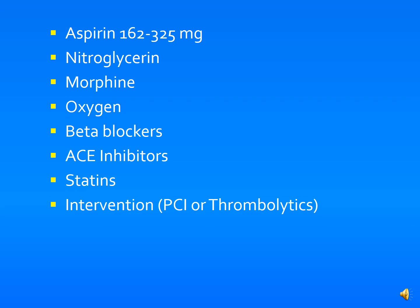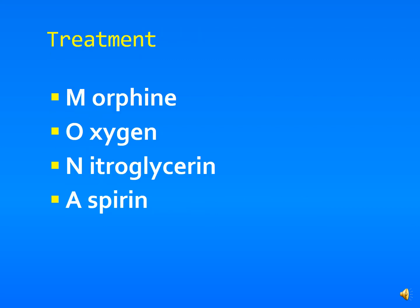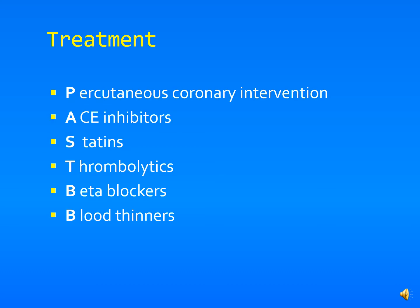Facilities without access to PCI should use thrombolytics, but if PCI is available and can be done in time, that is the preferred route. To remember all these treatments, use the mnemonic MONA: Morphine, Oxygen, Nitroglycerin, Aspirin. Then add beta blockers, PCI, ACE inhibitors, statins, thrombolytics, and blood thinners to prevent reocclusion.